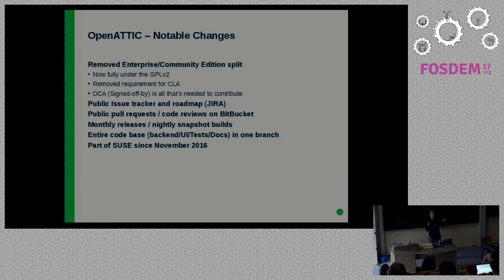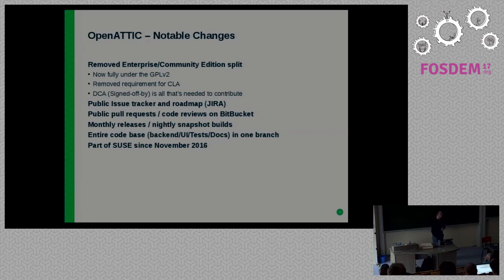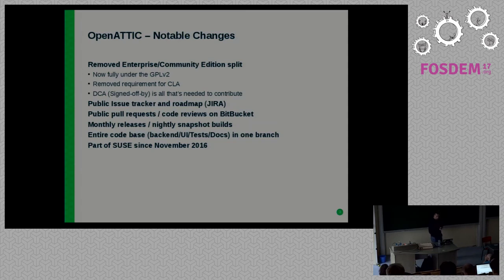Also, many different components were managed in separate code repositories — the documentation was in one repo, tests were in another. Integrating them and keeping them aligned was always a bit of a challenge. So we simply lumped all these repos together into one single repo, which now means you can work on a feature, write the documentation, create the tests, and have them all in a single branch and commit and merge them at the same time. It's much easier to keep track and keep things synchronized.